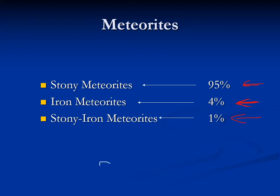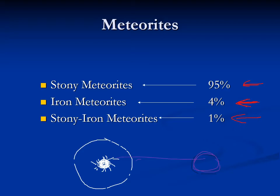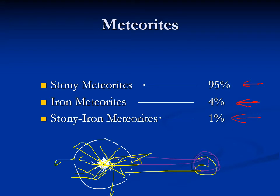Where do these things come from? The basic idea is that we have a differentiated asteroid — heavy stuff has sunk to the middle forming an iron core, with a rocky exterior, and a mixture of rock and iron in between. When another object slams into it and smashes it apart, the pieces from the crust give rise to stony meteorites, pieces from the core give rise to iron meteorites, and pieces near the core-mantle boundary give us the stony irons.